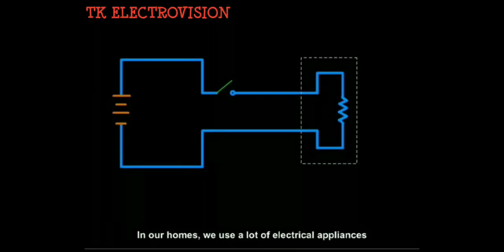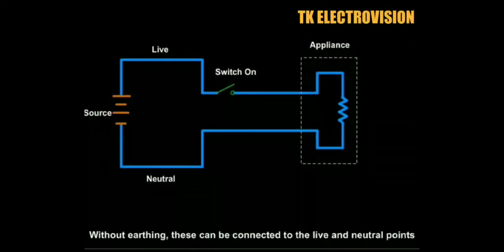This is a schematic of an electrical circuit with an appliance in the house. Here, there is no earthing. The live wire carries potential from the source, it comes from the source to the appliance, and the neutral wire carries it back to the source.